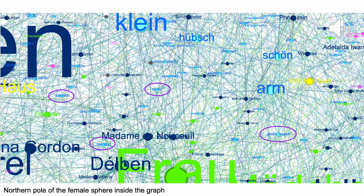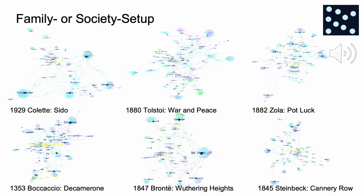Analysing these smaller networks, we realized that based on features and gender roles, some patterns emerged which we divided into five types. The first network type is the society or family setup. Characters are shown in dark blue, features in light blue, clothes in pink, and roles in yellow. Gender roles are represented in red for male roles, green for female roles, and grey for neutral roles. In this family or society setup, a bunch of characters are all described by a whole lot of individual features. The most prototypical example of this type is 'War and Peace' by Tolstoy.